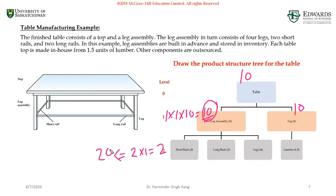Similarly, I will need 20 long rails, 40 legs—four legs per assembly times 10 assemblies. And from here, I need 15 units of lumber—1.5 units per tabletop times 10 tops.